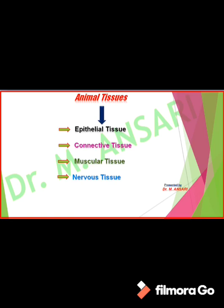Epithelial tissue is of two types: simple epithelium and compound epithelium. On the basis of shape of the epithelial cell, simple epithelium is divided into squamous, cuboidal, columnar, ciliated, and one specialized type — glandular epithelium.